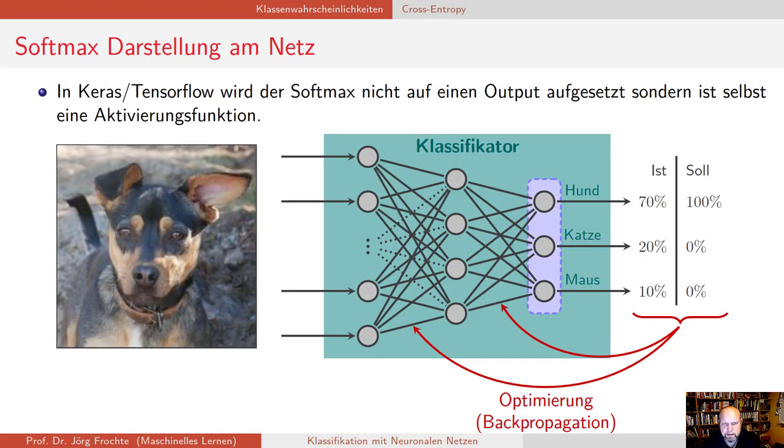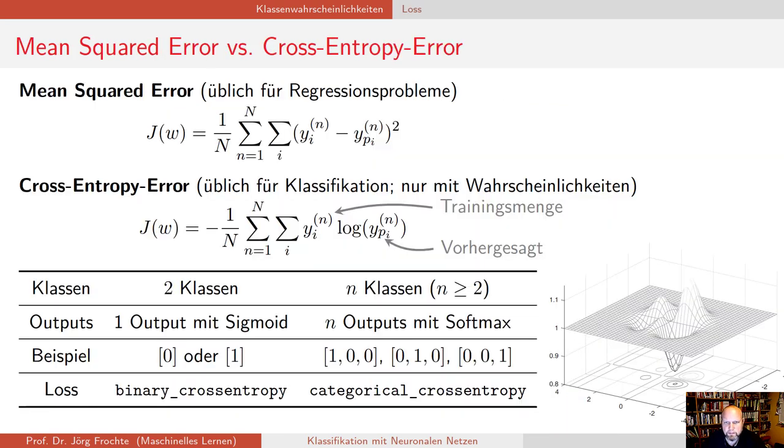Zuvor aber noch ein Hinweis. Ich habe das jetzt so gemacht, dass ich das im Nachhinein angewendet habe einmal, damit man ein Gefühl hat, vorher, nachher, wir kommen vom Sigmoid, wo gehen wir hin? So wird es aber nicht praktisch in Keras umgesetzt. In Keras ist eben dieser Softmax direkt ein eigener Layer, den wir im Output anwenden und ist eine Aktivierungsfunktion an sich.